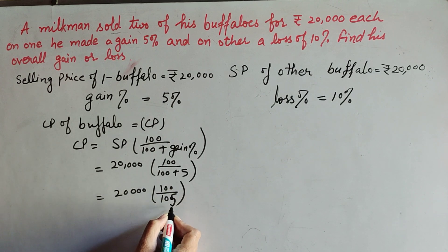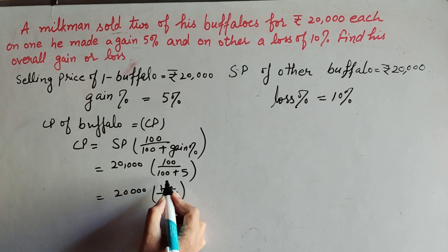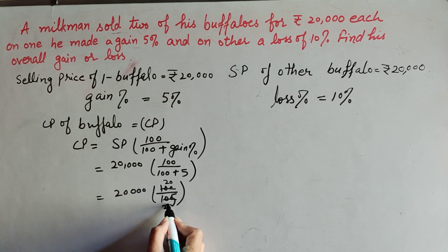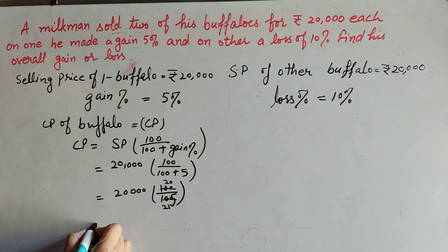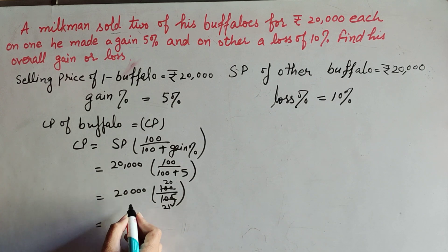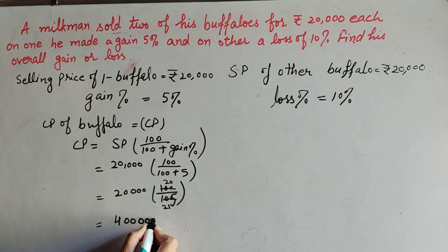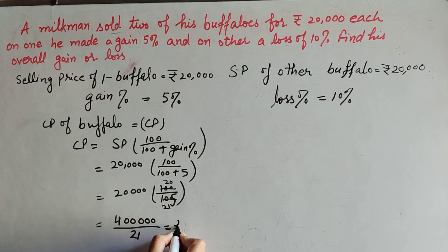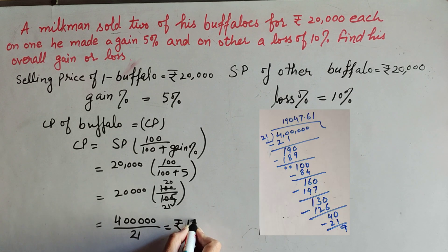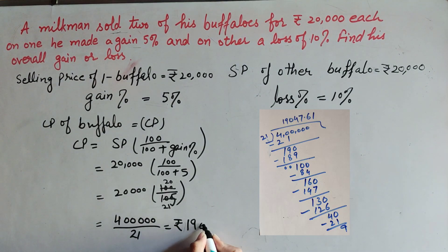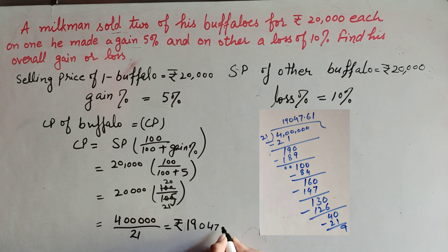Both 100 and 105 are divisible by 5, so we cancel them — 100 becomes 20 and 105 becomes 21. So we get 20,000 × 20 = 4,00,000 over 21. Dividing 4,00,000 by 21 gives us rupees 19,047.61. So the cost price of the first buffalo is rupees 19,047.61.